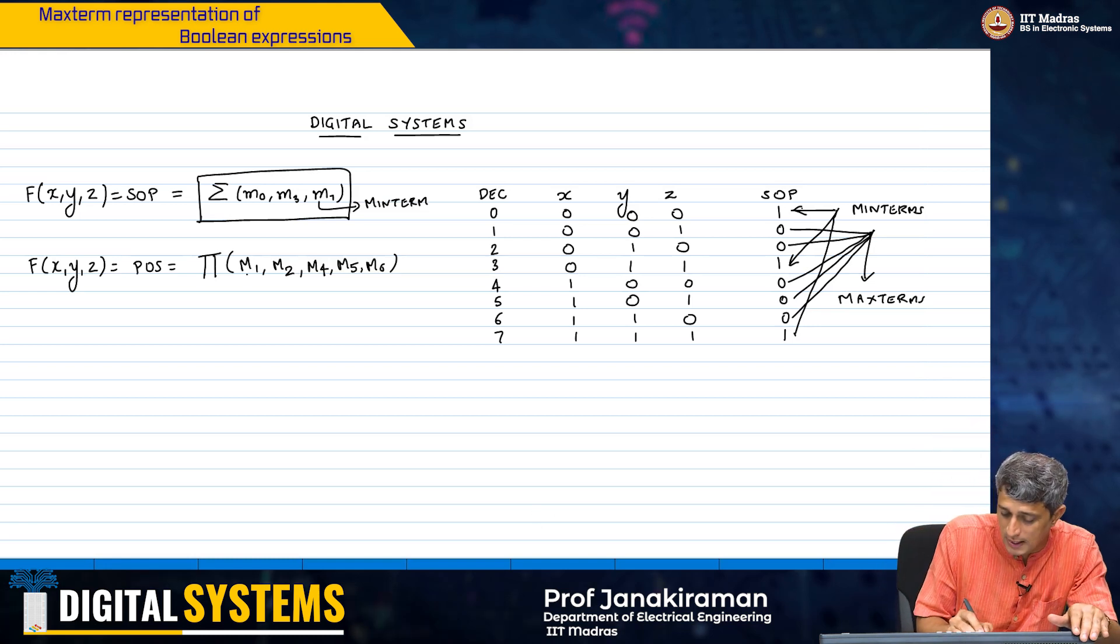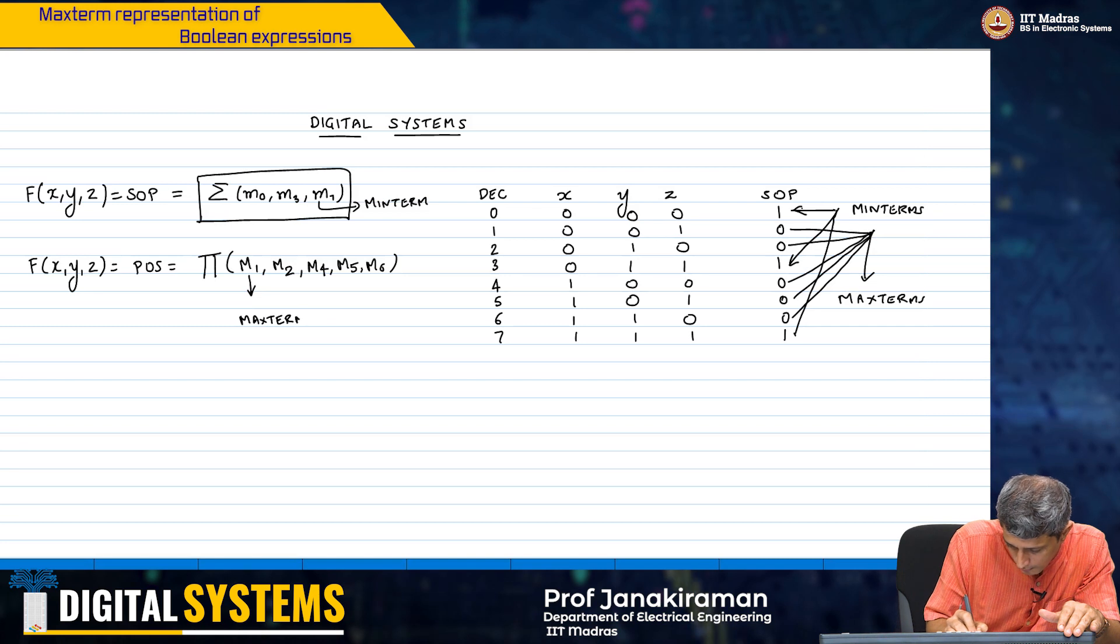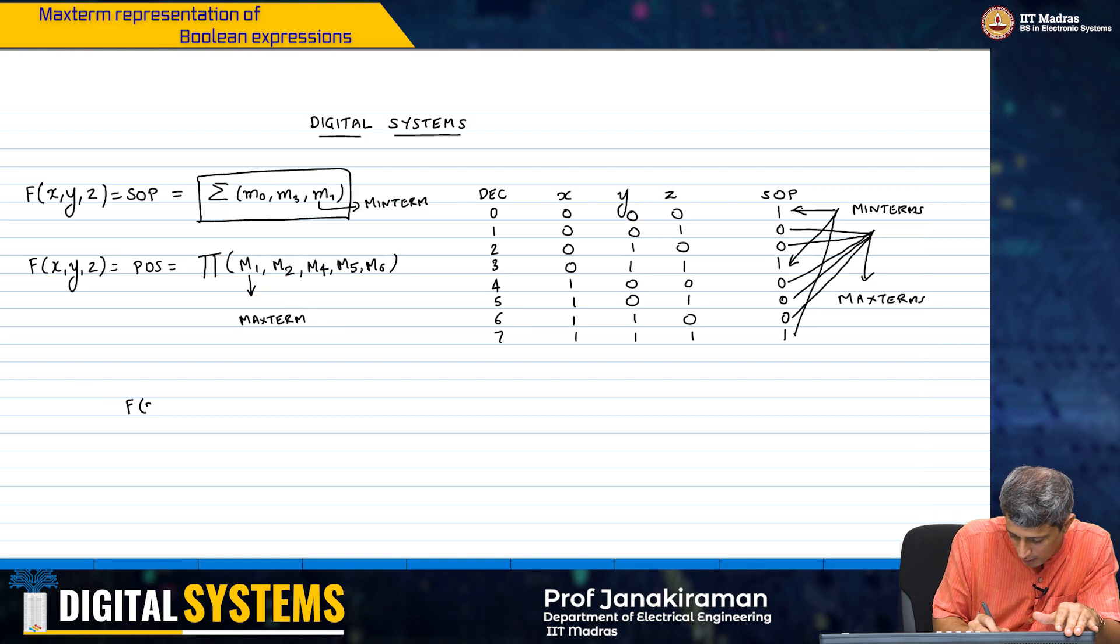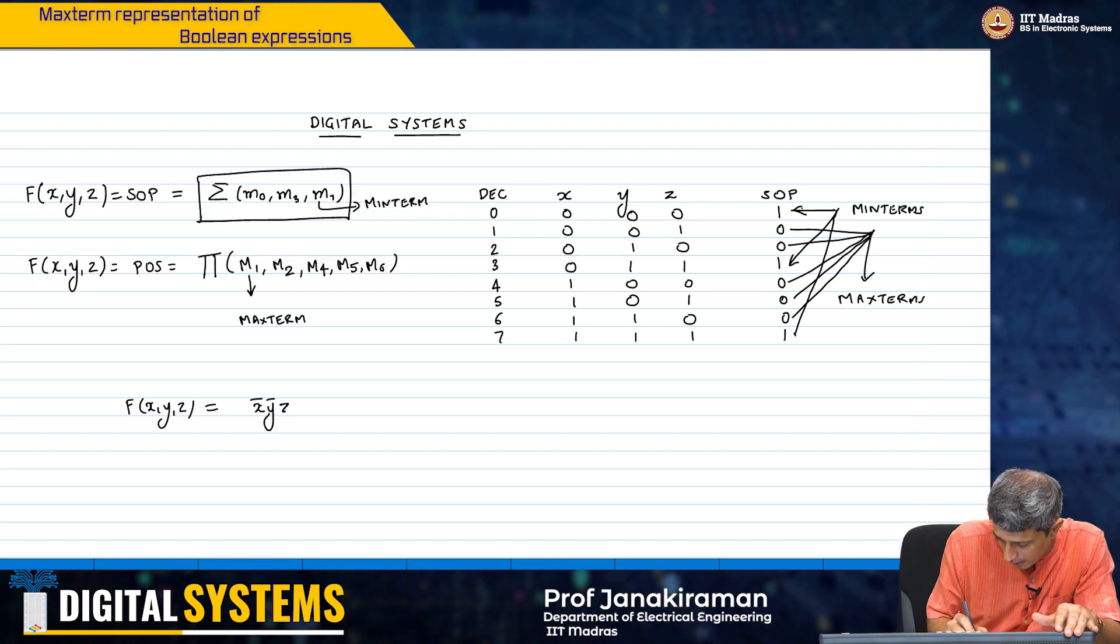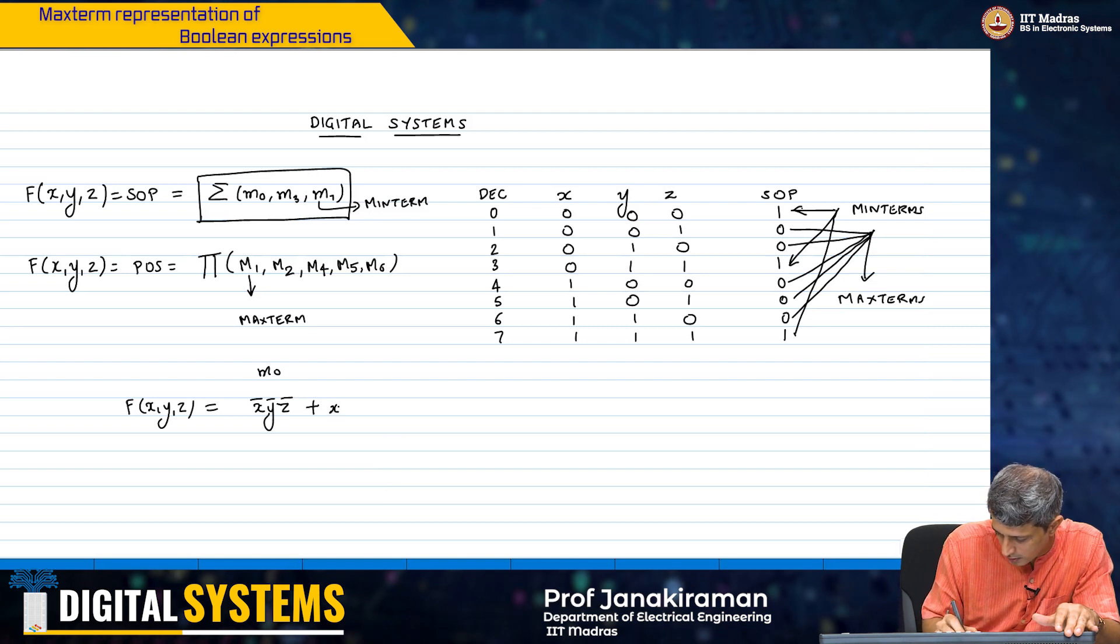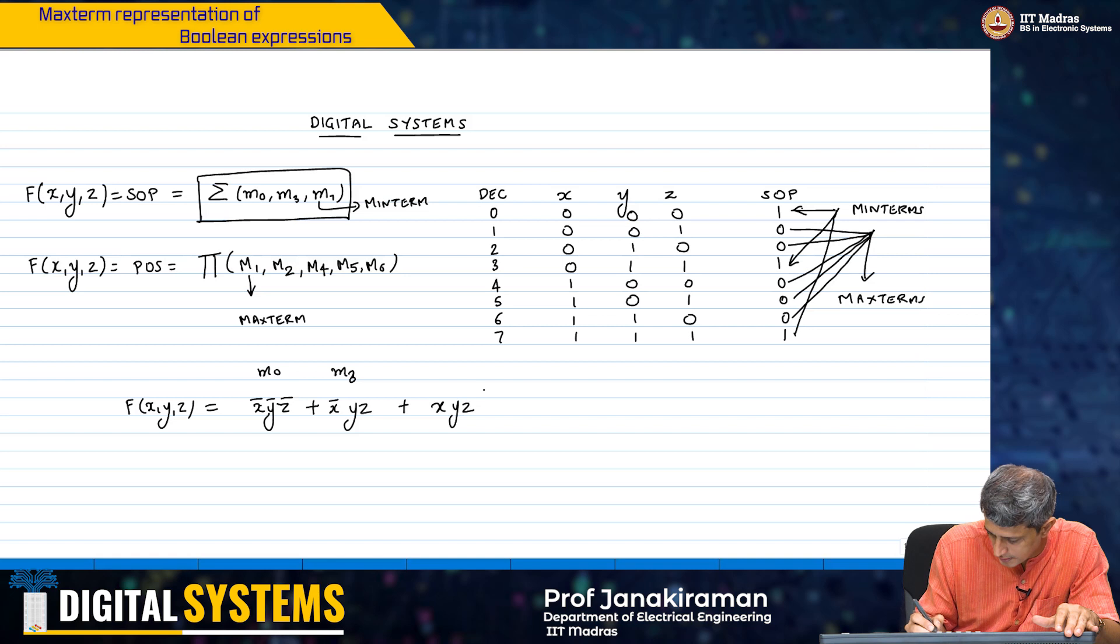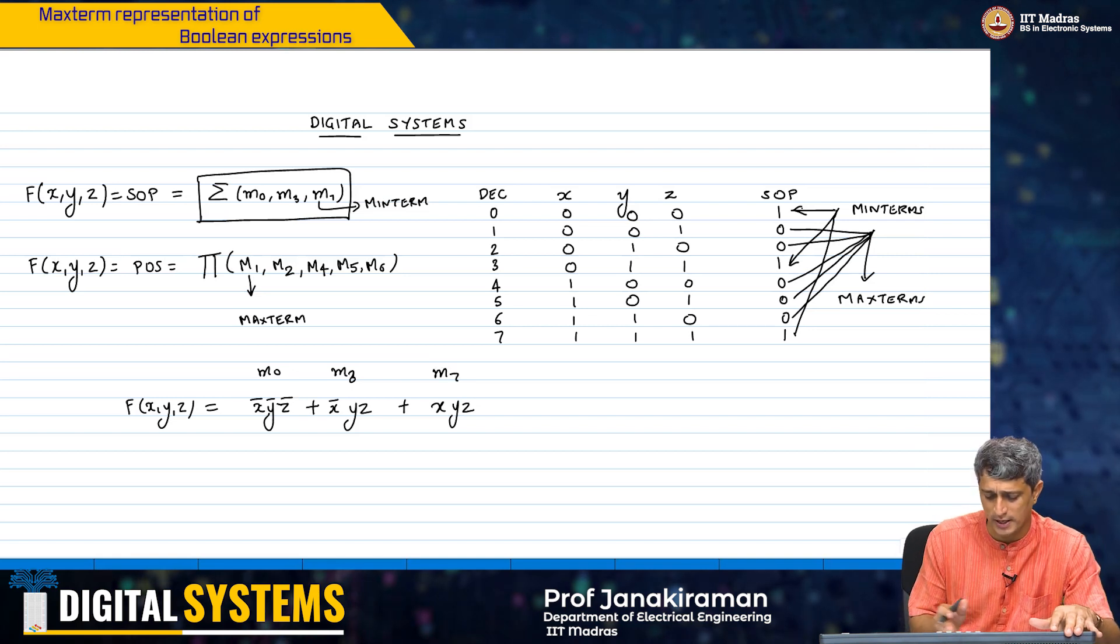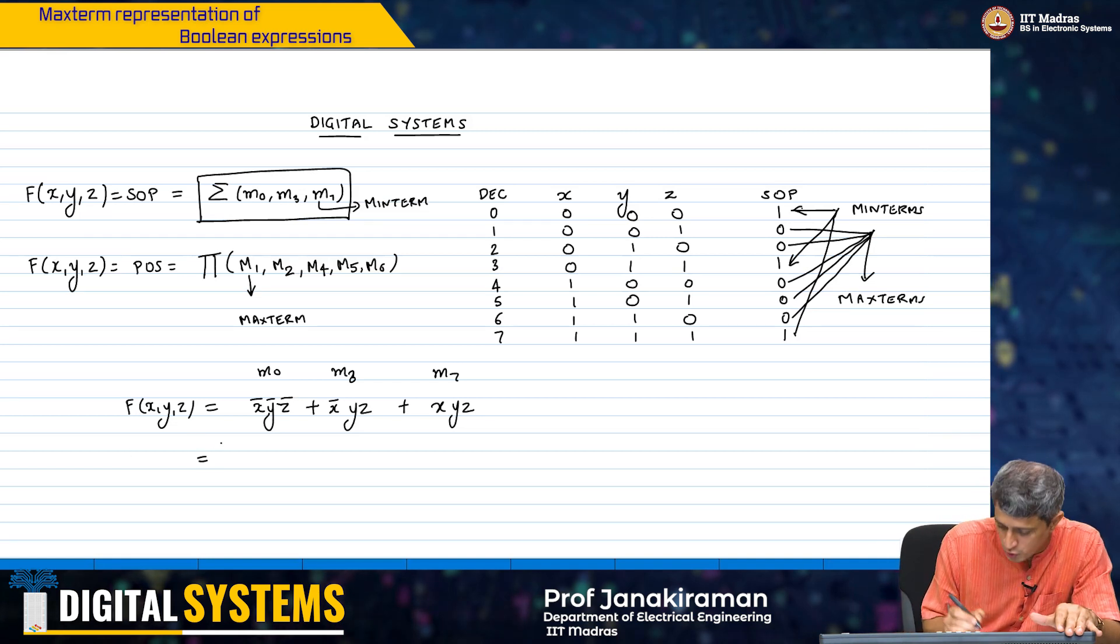This is, remember, a product of sums and therefore, each m is a max term. So, effectively if you go back and look at this f of x, y, z, the sum of product is obviously going to be x bar y bar z bar for m0, or x bar y z for m3, or x y z for m7. This can be simplified further by taking y z common and then saying there is x plus x bar that becomes 1 and so on.